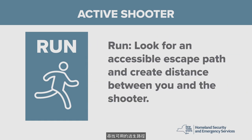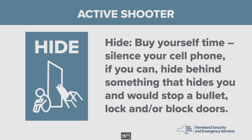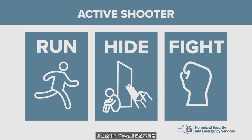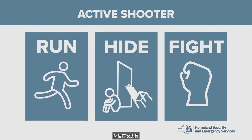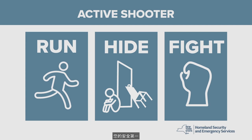Run — look for an accessible escape path and create distance between you and the shooter. Hide — buy yourself time. Silence your cell phone if you can. Hide behind something that hides you and would stop a bullet. Lock and/or block doors. Fight — when your life is in imminent danger, as a last resort, fight with all your might. It's important to remember that the order of these actions does not matter — evaluate your own individual situation and determine which response is best for you in that moment. Sometimes you may run, then hide, then run again. You may need to hide, then fight, then run. Do what works for you in your situation.